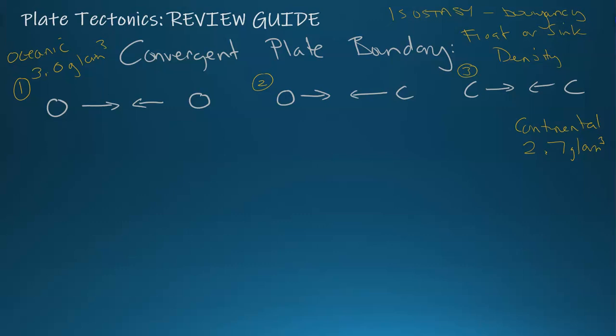So the denser plate, when it collides and converges with the other plate that's less dense, it's going to sink. The other one that's less dense will be more likely to float, especially over the asthenosphere, which is like a massive, huge, hot, yellow mold of higher density.